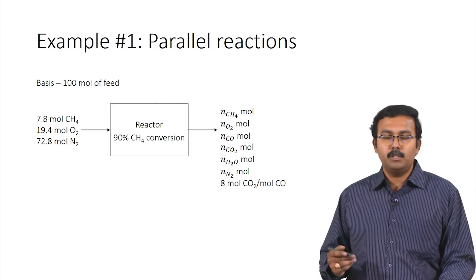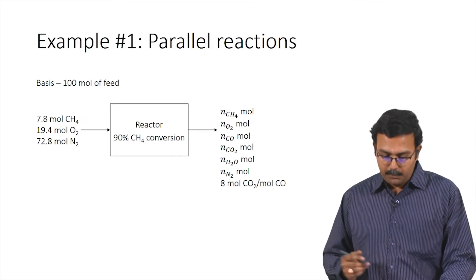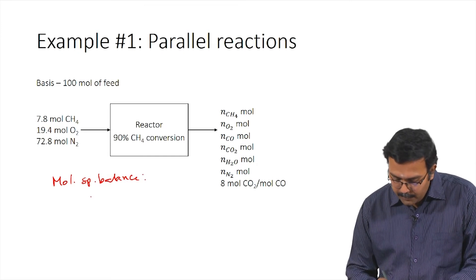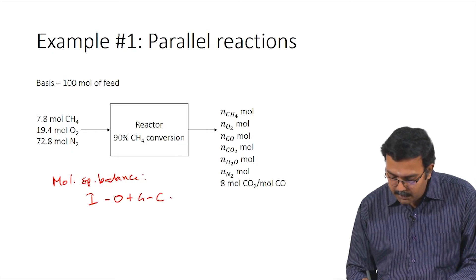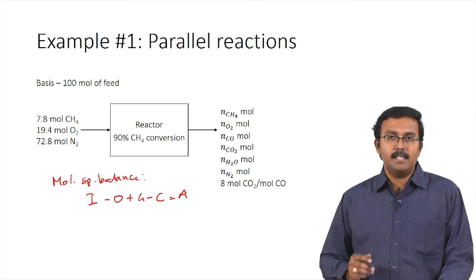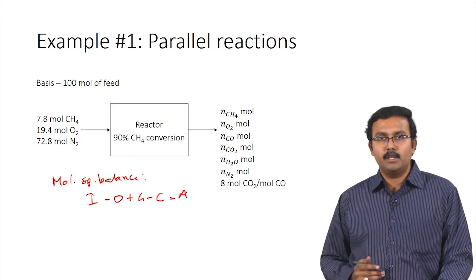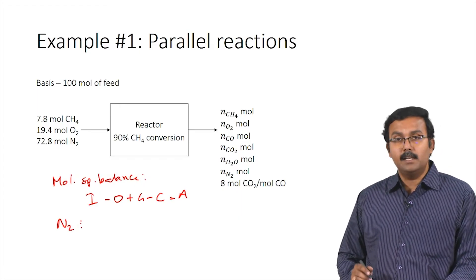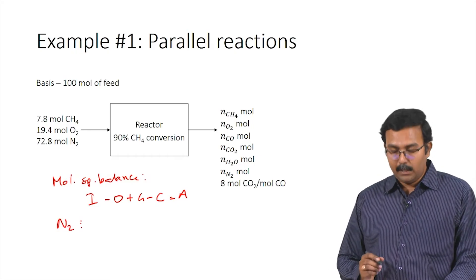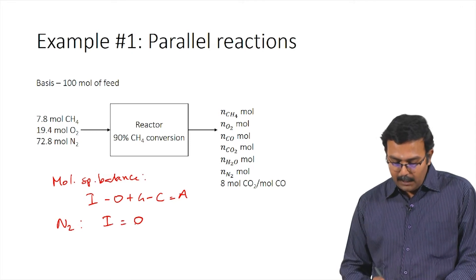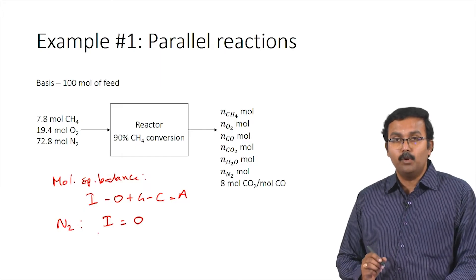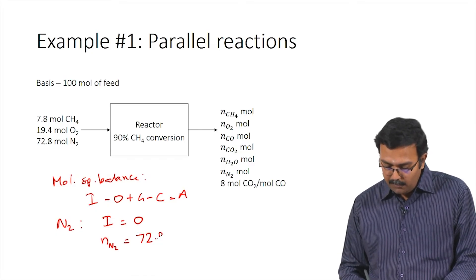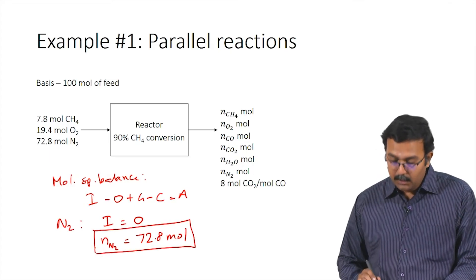The problem requires both molecular species balances and atomic species balances. The general molecular species balance is: input – output + generation – consumption = accumulation. For non-reactive components, generation and consumption are zero, and at steady state accumulation is also zero, giving input = output. For nitrogen, a non-reactive component, N_N₂ out = 72.8 moles.